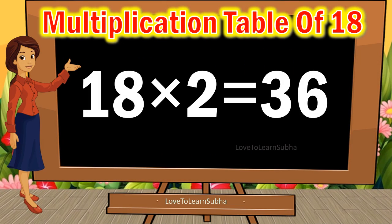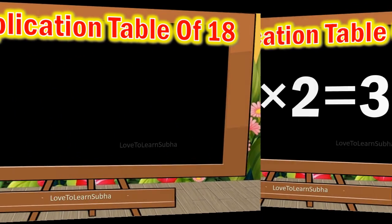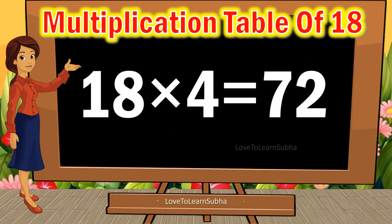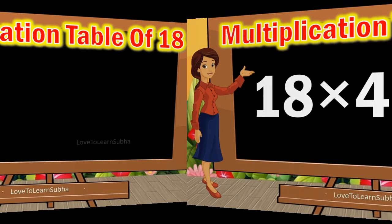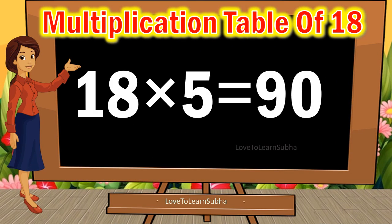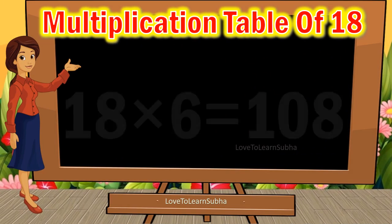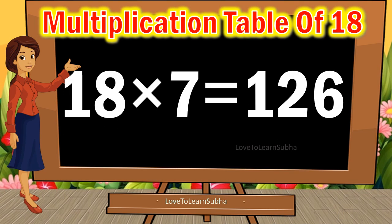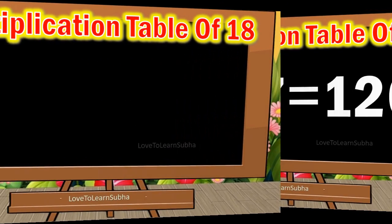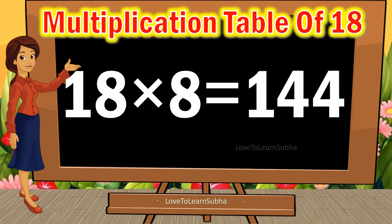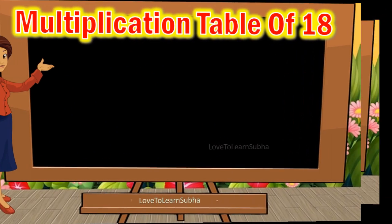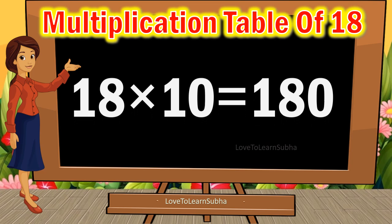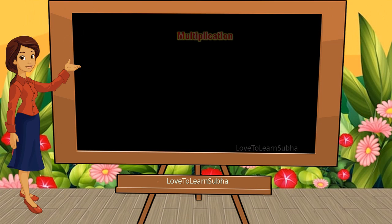18 2's are 36, 18 3's are 54, 18 4's are 72, 18 5's are 19, 18 6's are 108, 18 7's are 126, 18 8's are 144, 18 9's are 162, 18 10's are 180. Now let's repeat it once again.